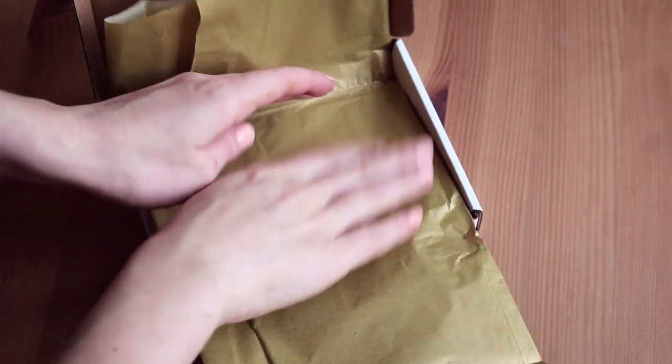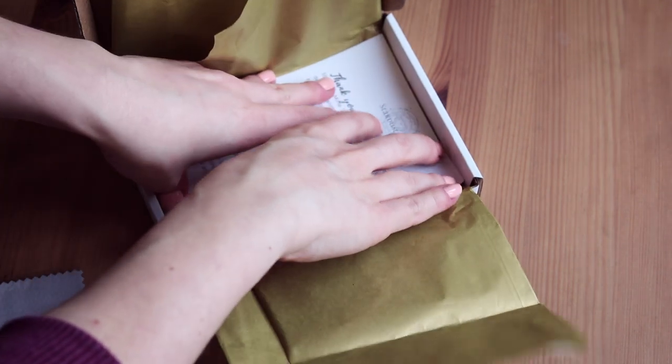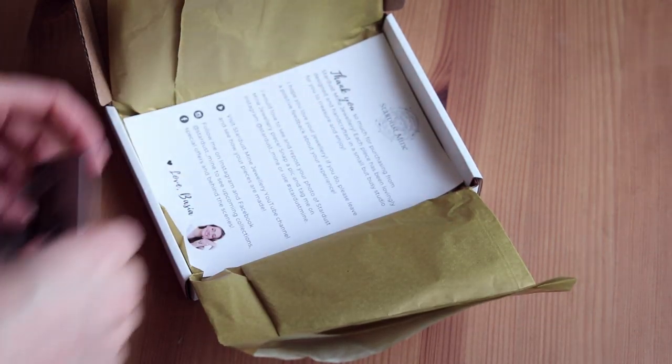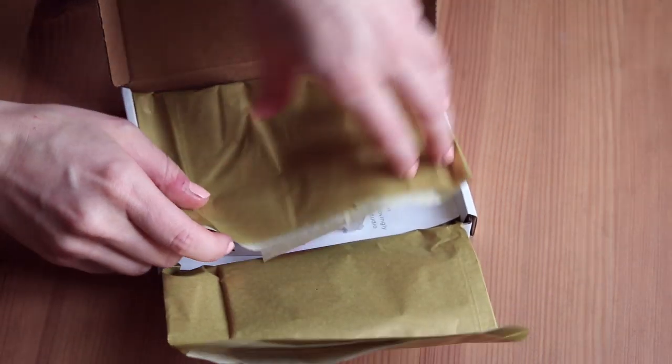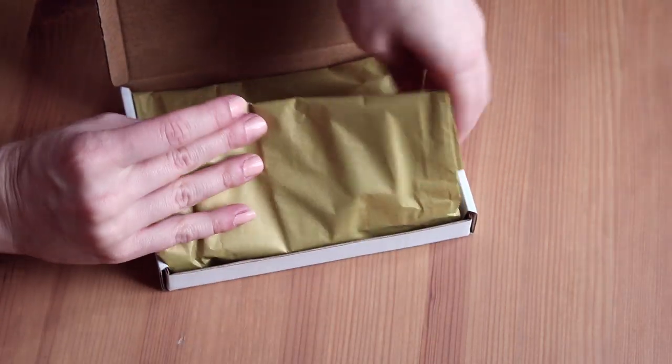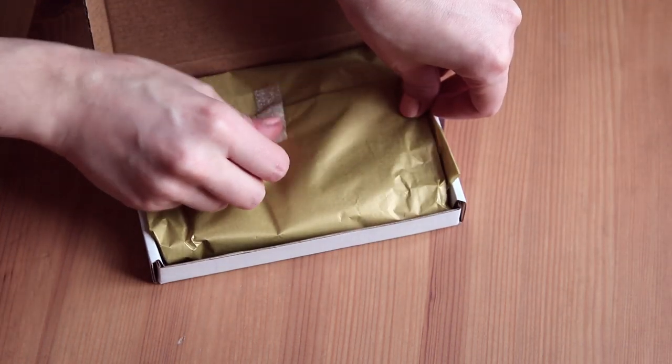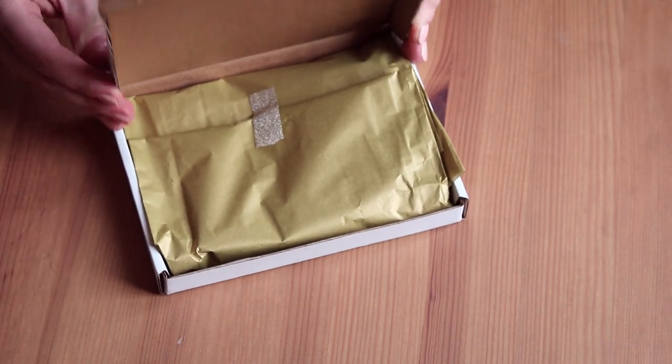I will now show you an example of how I pack some of the orders. You can put some lovely tissue paper inside and add all of the little bits and bobs that you want to include in this order. Then you can wrap it up and put a washi tape on top to seal it.